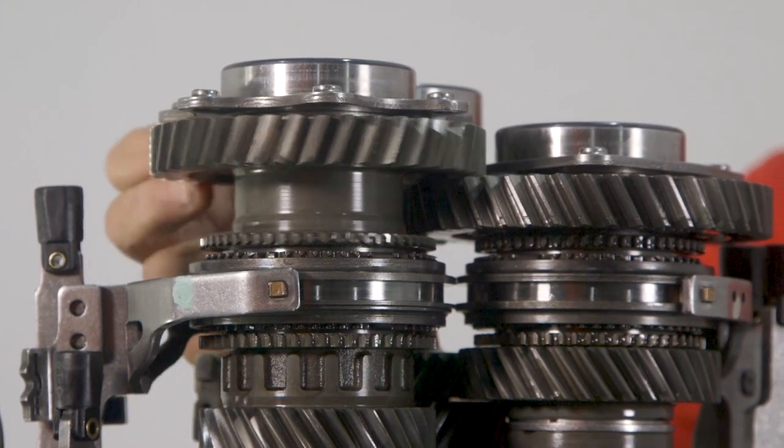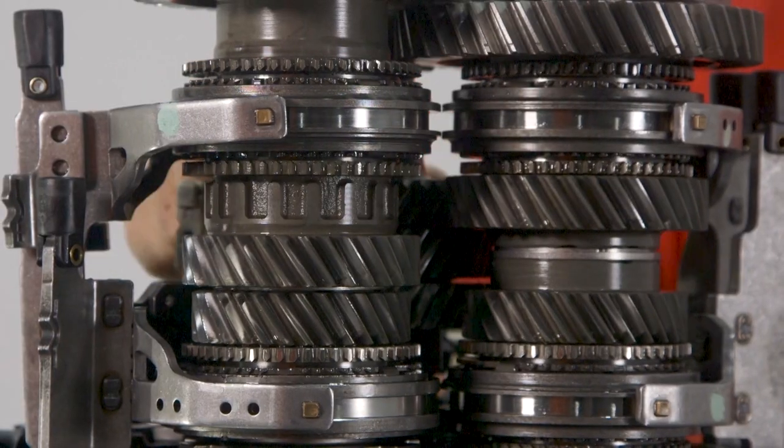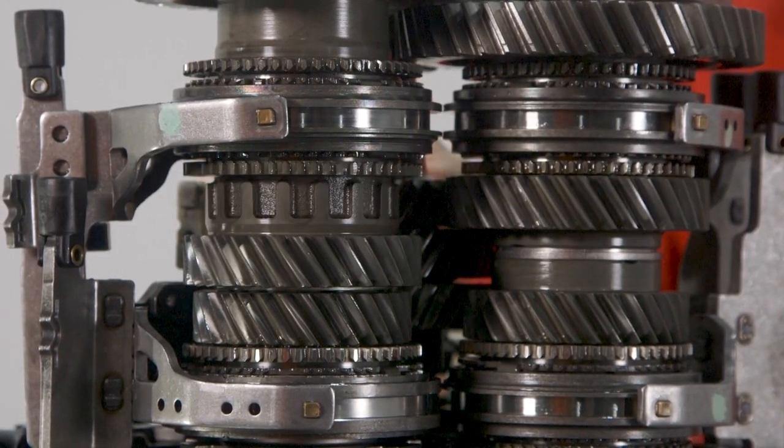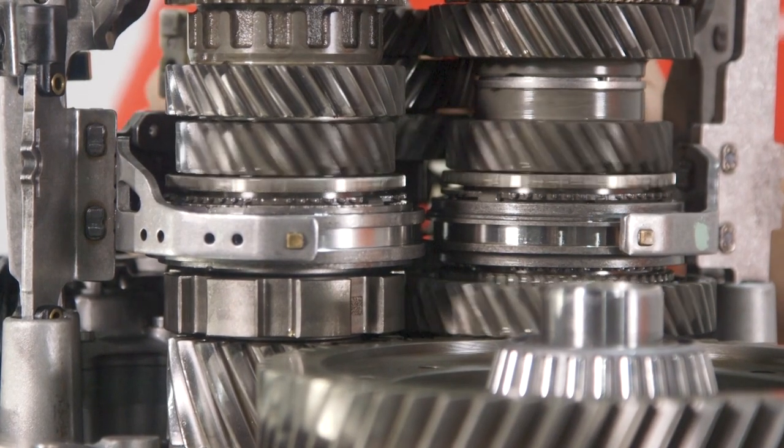Just like a conventional manual transmission, speed gears are free to rotate on the shaft until they are locked to that shaft using a synchroniser hub and sleeve assembly.